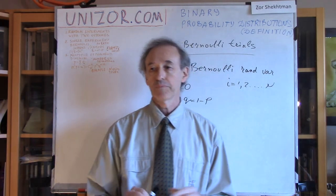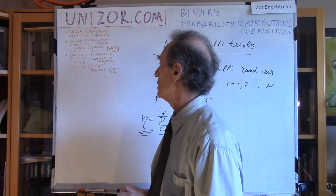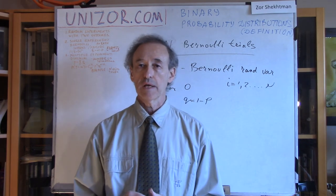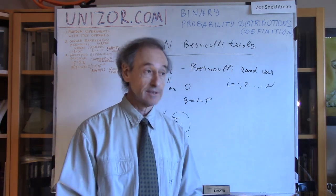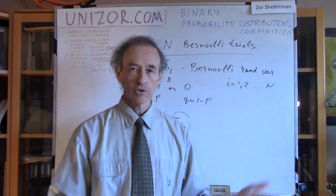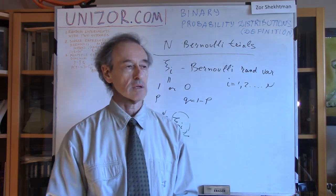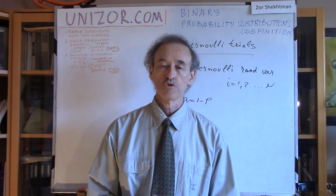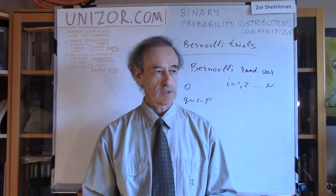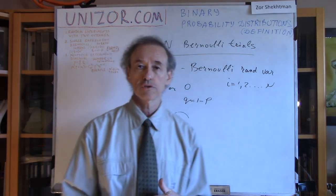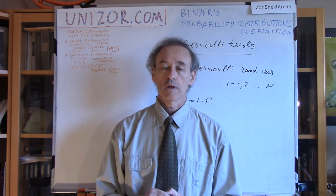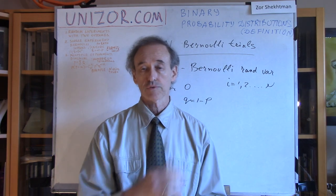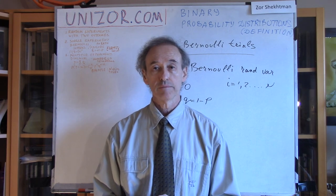An obvious example is coin tossing for Bernoulli distribution, and tossing N coins simultaneously or sequentially and counting how many heads or tails — that is an example of binomial distribution. Next lectures will be devoted to numerical characteristics like expectations and deviations. That's it for today. Don't forget that unizohr.com contains all the notes for this and all other lectures. Try to read it after you watch the lecture — it will be very beneficial. Thanks very much, good luck.